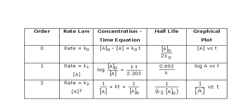Here is a table to summarize. A zero-order reaction has a rate law of rate equals K. The concentration-time equation is initial concentration of A minus final concentration of A equals K times time. The half-life is the initial concentration of A over 2K. The graph is concentration of A versus time. For first-order, the rate law is rate equals K times concentration of A. The concentration-time equation is log of initial concentration of A over final concentration of A equals K times time over 2.303. The half-life is 0.693 over K.